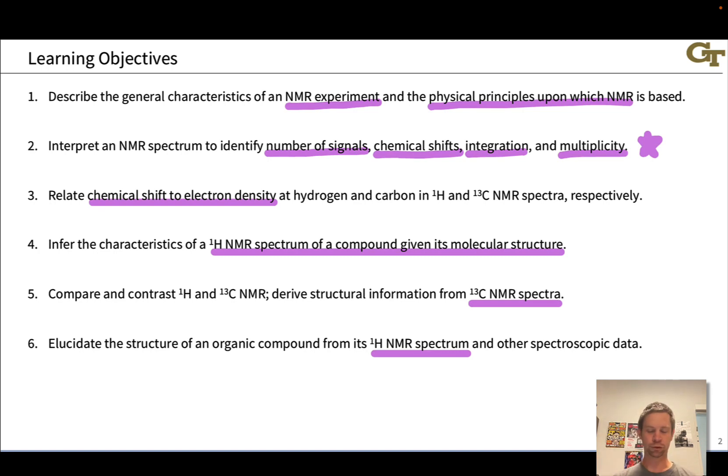We'll learn how to relate chemical shift to electron density around carbons and hydrogens in molecular structures, and in this way we'll learn to recognize specific functional groups within a compound based on the positions of their signals in NMR spectra along the x-axis, which is again this idea of chemical shift.